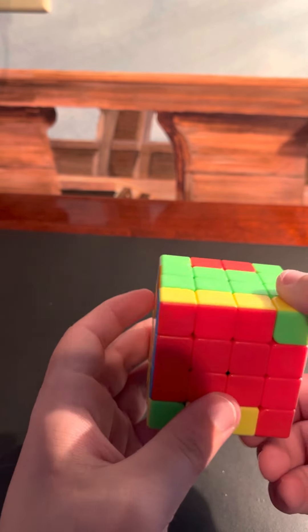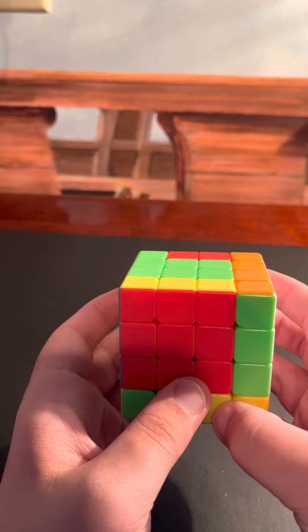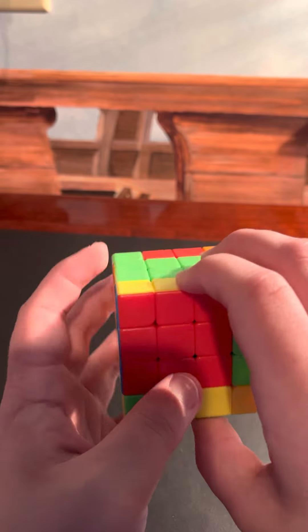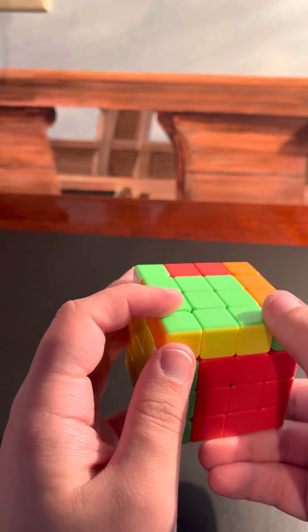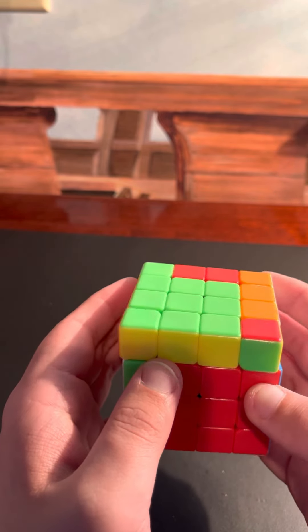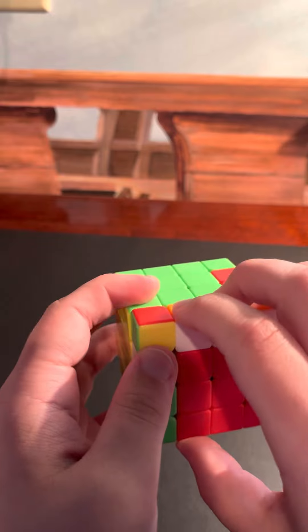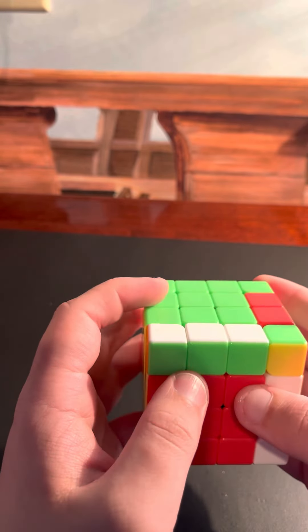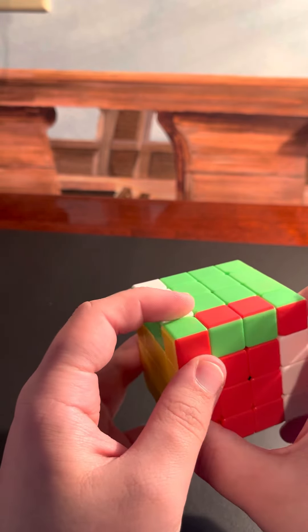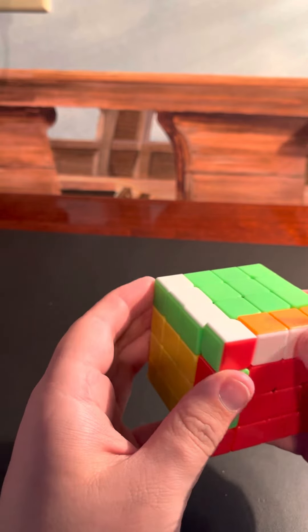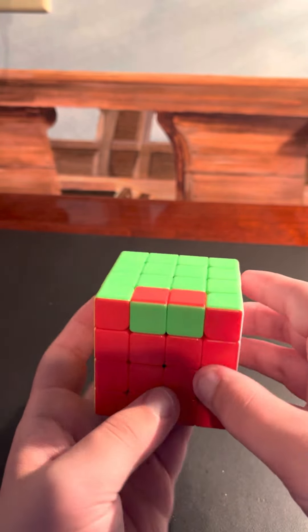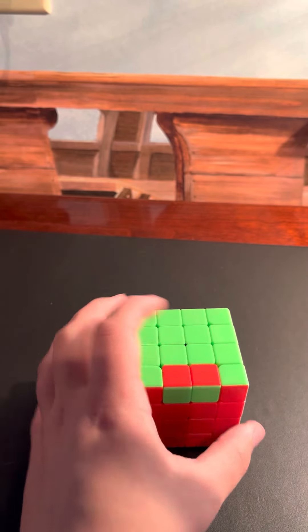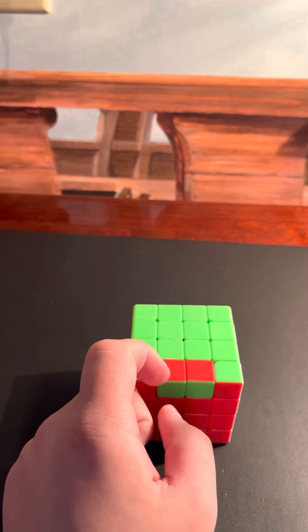R prime, two F, U, F, U, F prime, U prime, F, R—and that'll flip those two pieces around, and then we have one more parity.